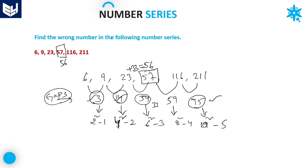If the number is corrected to 56, then the gap to 116 becomes 60, which equals 8²−4 — satisfying the condition. And the last gap is 10²−5 = 95, which also checks out. So the full pattern for the gaps is: 2²−1, 4²−2, 6²−3, 8²−4, 10²−5 — consecutive even numbers squared, minus consecutive integers. Therefore, the wrong number in the series is 57.